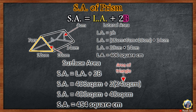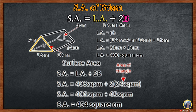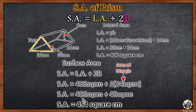Next, find the surface area: lateral area plus 2B. The base is the triangle, and we have two bases (top and bottom). So 406 square centimeters plus 2B. The area of the triangular base is base times height divided by 2: 12 times 4 equals 48, divided by 2 equals 24 square centimeters. So 24 times 2 equals 48 square centimeters. 406 plus 48 equals 454 square centimeters.